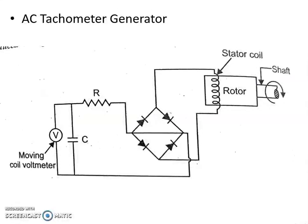Now let us discuss the AC tachometer generator. This AC tachometer generator overcomes the problems associated with the DC tachometer generator due to the presence of commutator and brushes. It consists of a stator coil and a rotor, and its construction is like an alternator — it has a stationary armature (stator) and a rotating field system (rotor). The shaft whose angular velocity is to be measured is connected to the rotor. As the rotor rotates, EMF is induced in the stator coil.